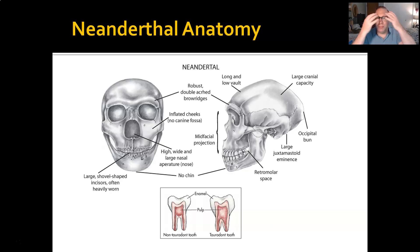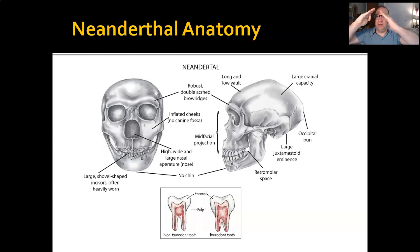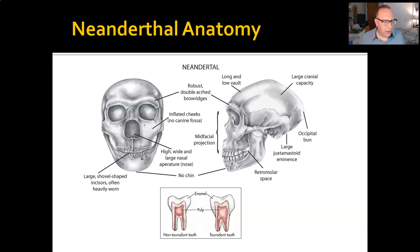The brow ridge is one of the most prominent features of the face and very hard to miss. Along with that, they have inflated or angled cheeks—instead of being flush with the face, they angle out in the mid-facial region. We call this mid-facial prognathism or mid-facial projection. The nasal passage is extremely high and wide, which is a cold adaptation.